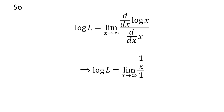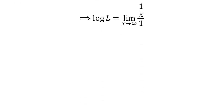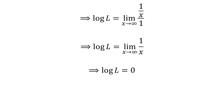The derivative of log of x is equal to 1 upon x, and the derivative of x with respect to x is equal to 1. So the limit log of L is equal to the limit of 1 upon x as x approaches infinity. As x approaches infinity, 1 upon x approaches 0, so log of L is equal to 0.